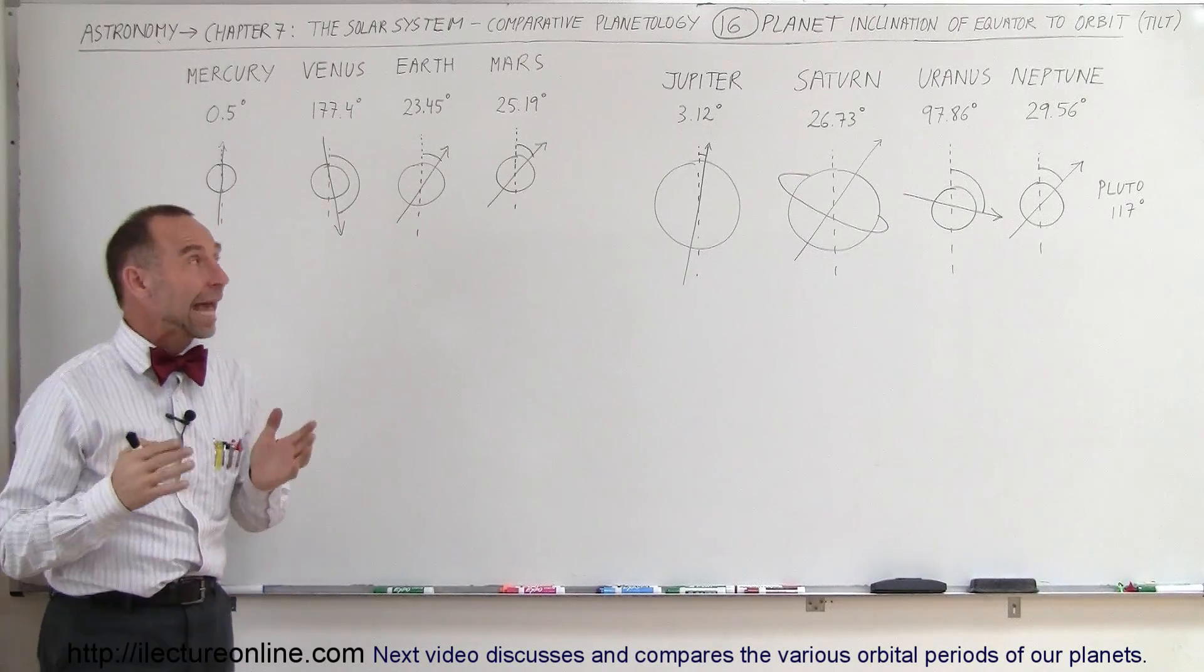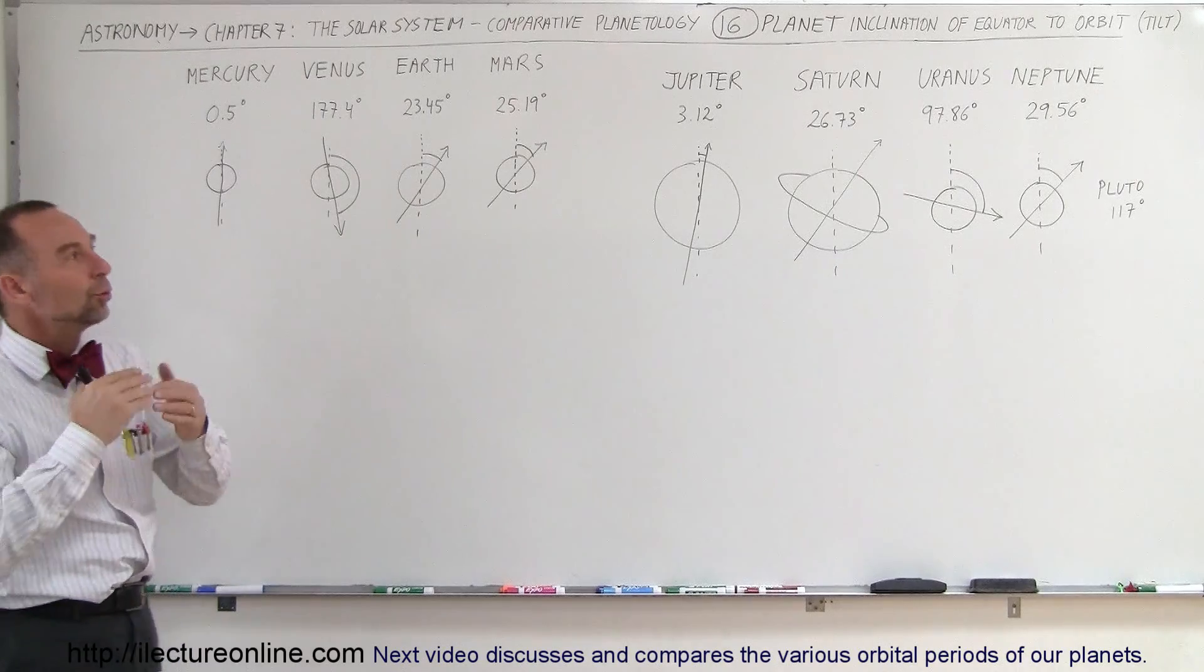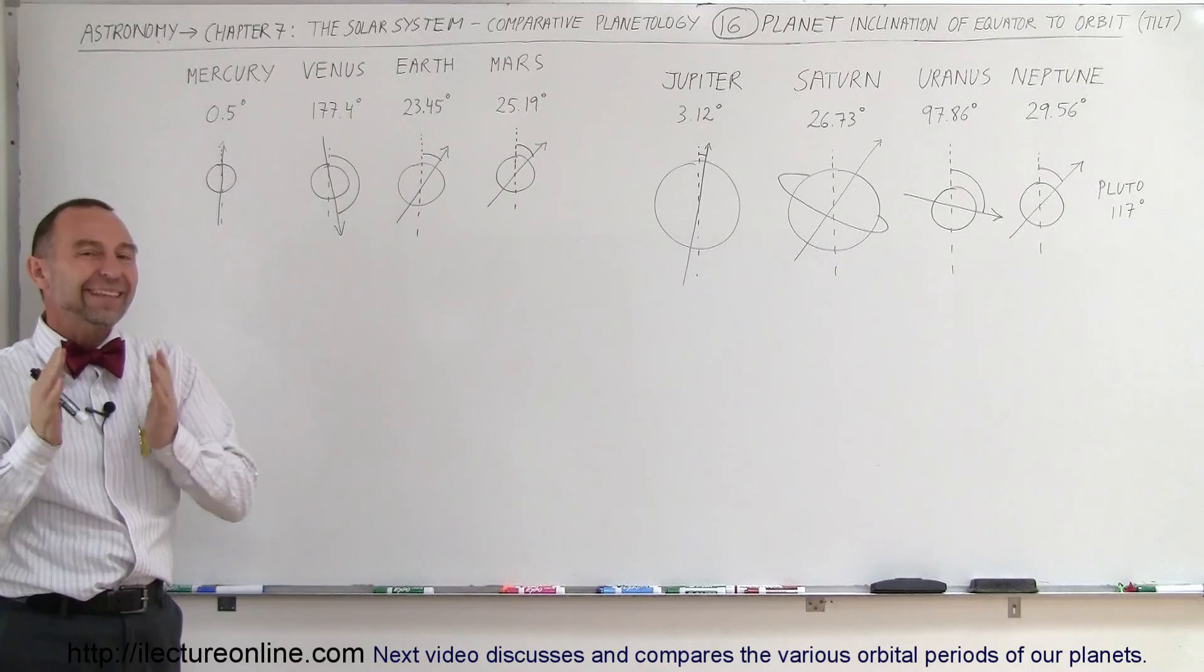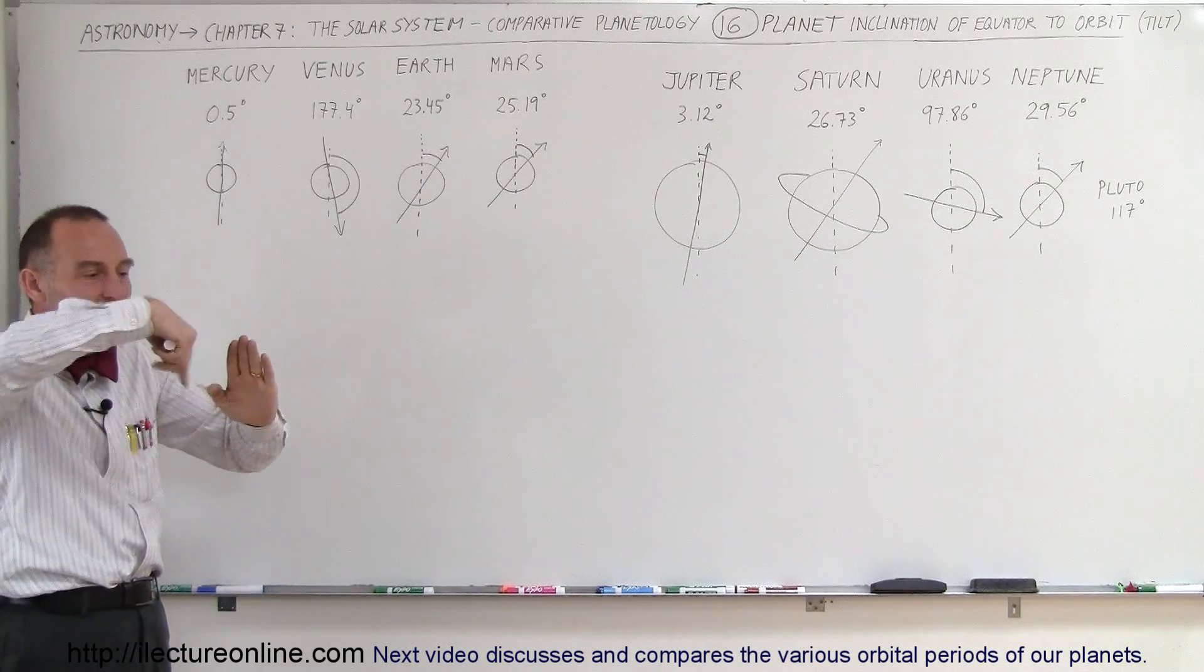Welcome to LectureOnline. Now let's take a look at what we call the planet inclination of the equator to the orbit of the planet. What we call the tilt is exactly that—it's the way the planet is tilted as it rotates on its axis.